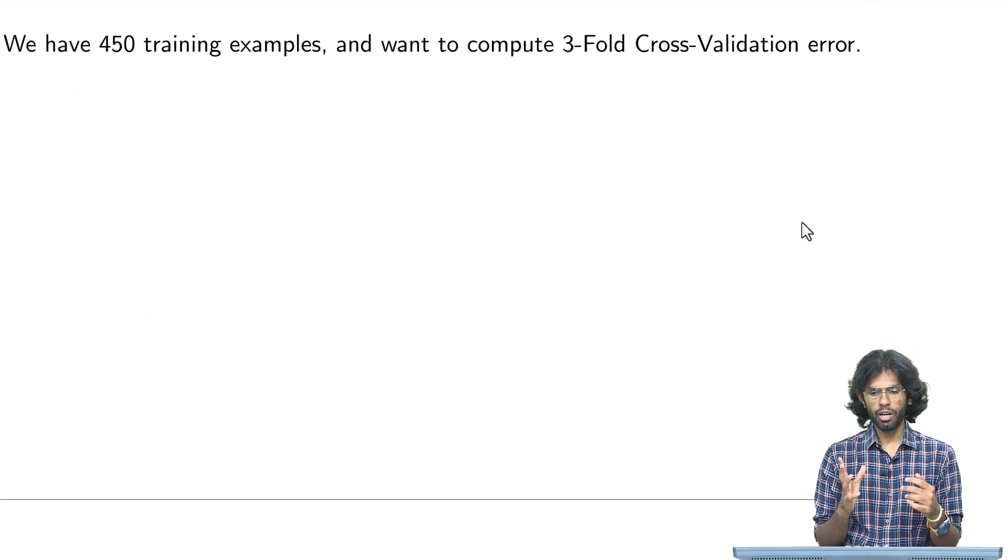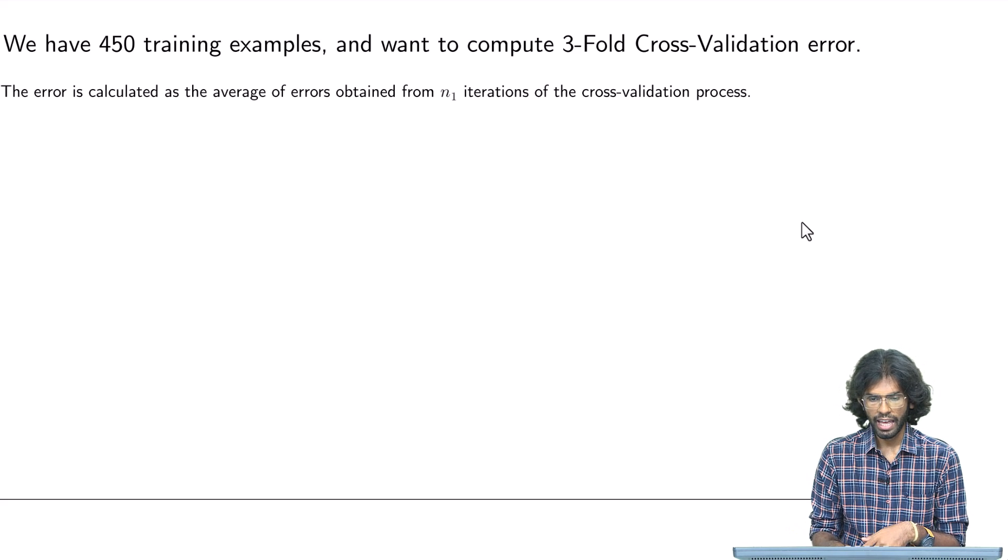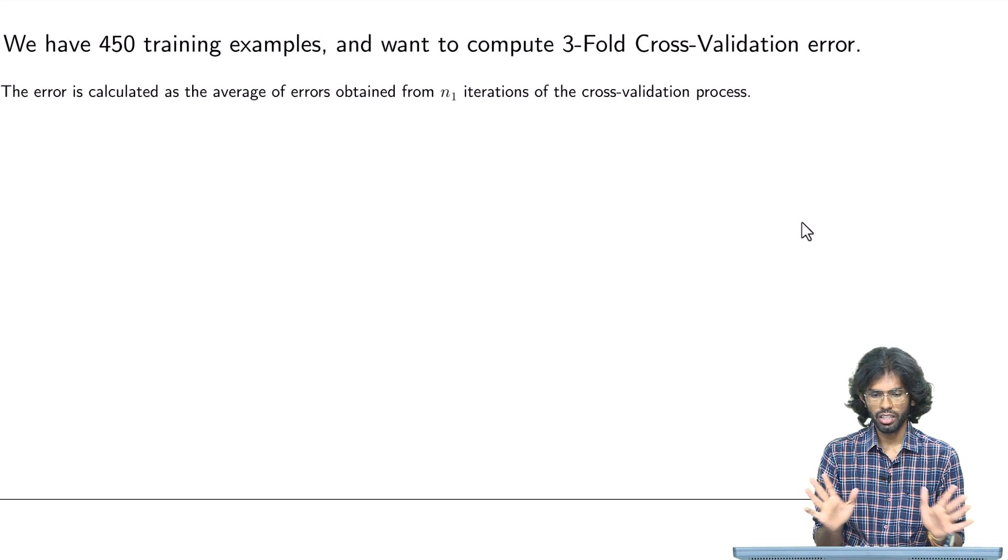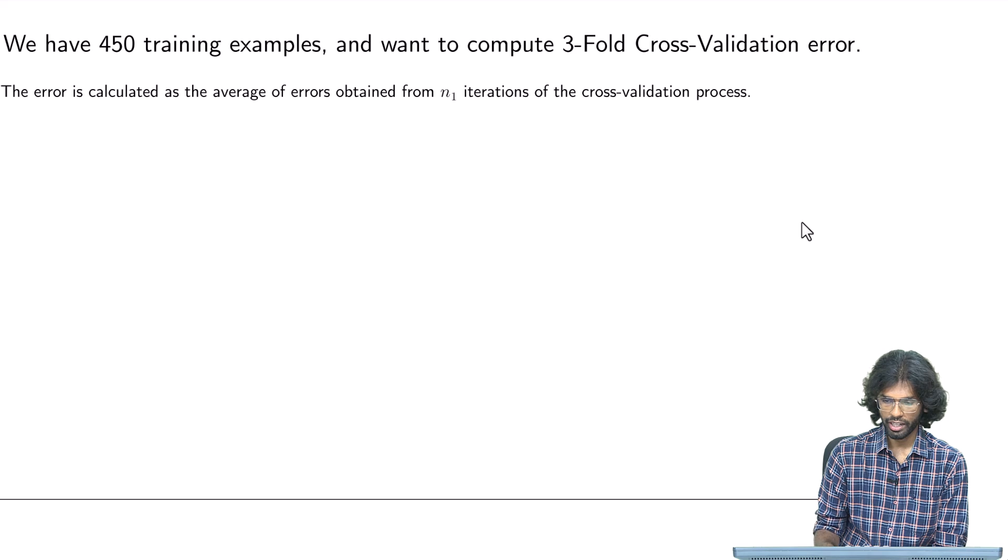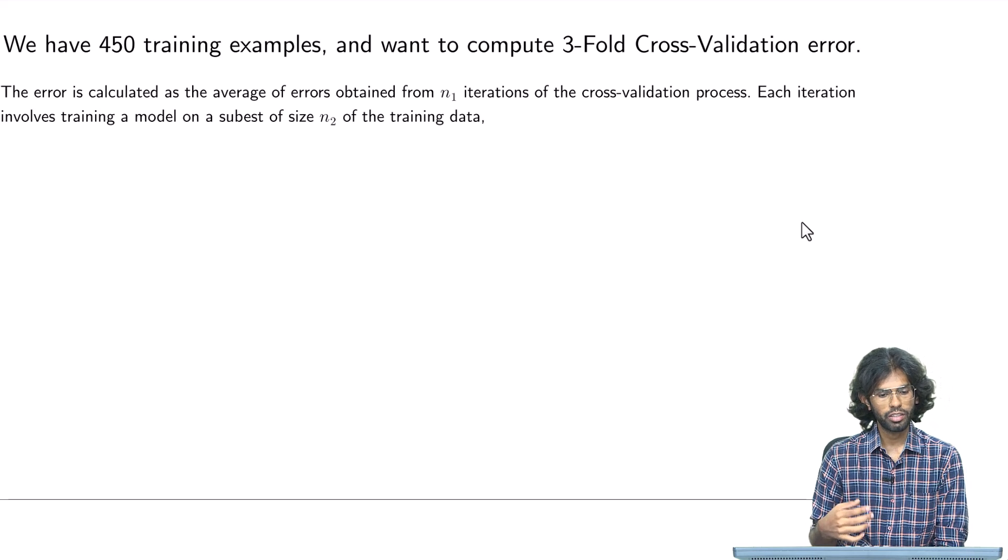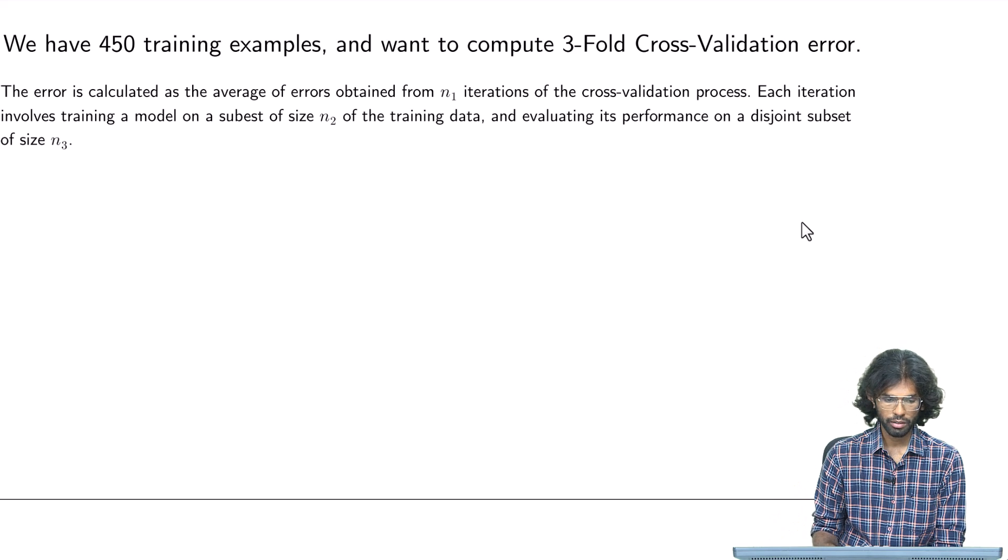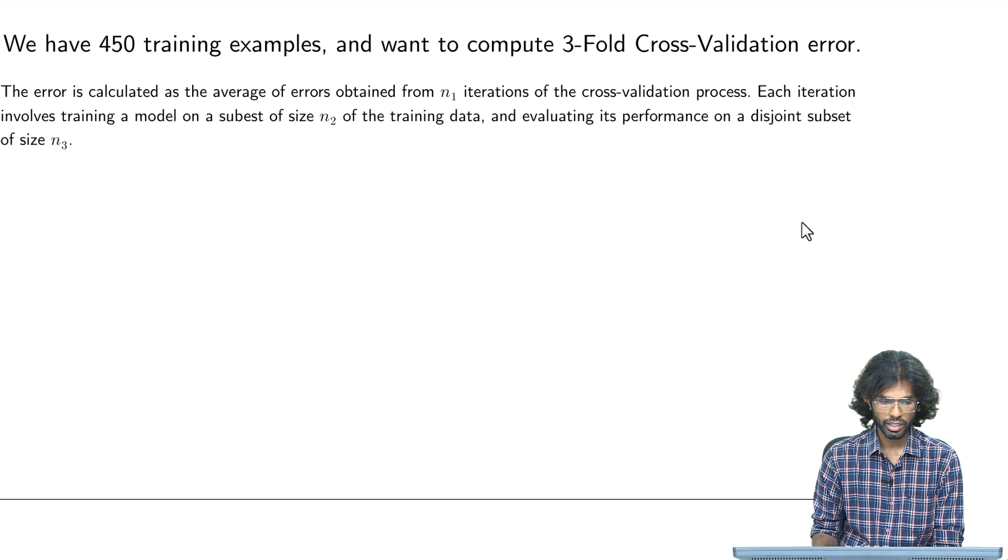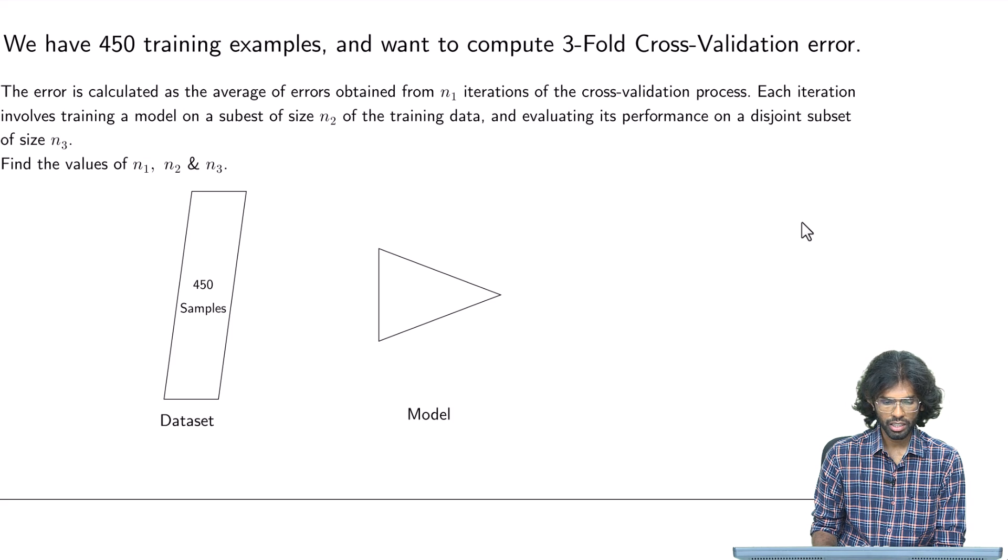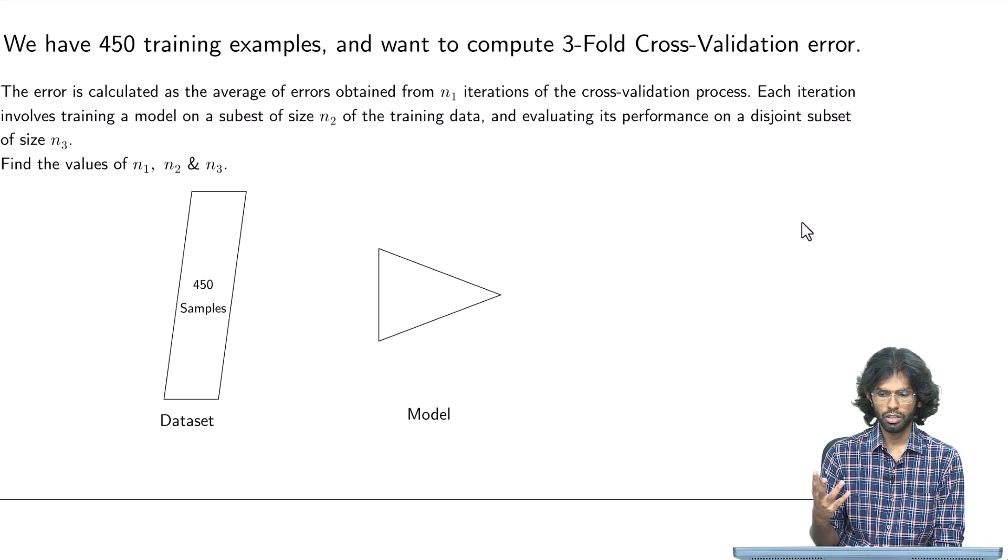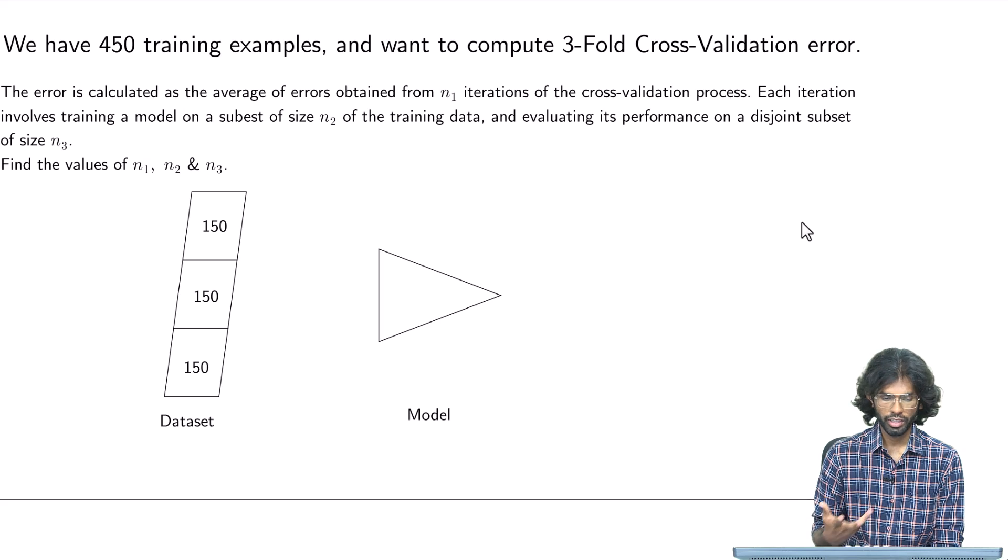Now we will go through a small example of what k-fold cross-validation is. We have 450 training examples, and the error here is calculated as the average of errors obtained from n1 iterations. Each iteration involves training a model on a subset of size n2 and evaluating its performance on a disjoint subset of size n3. We have to find what this n1, n2, n3 are. We have 450 samples. First, in 3-fold cross-validation, we split our dataset of 450 samples into 3 folds, which is 150 each. In this, we will fix one of them to be our validation set and the rest, the union of the rest, to be our train set.